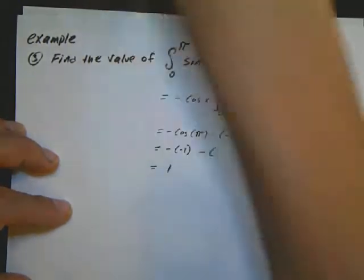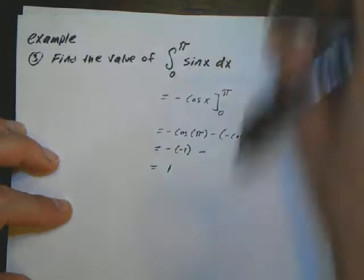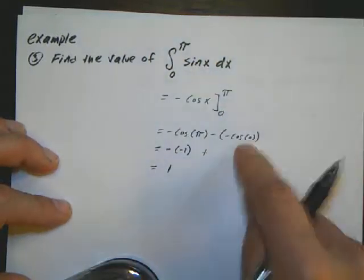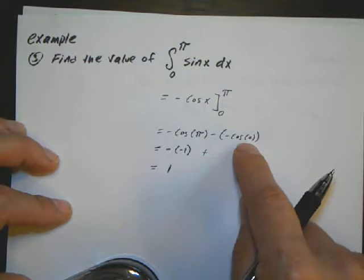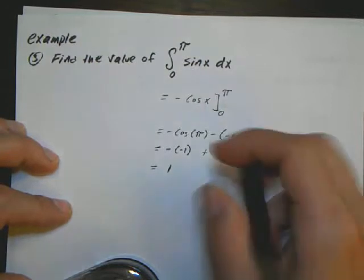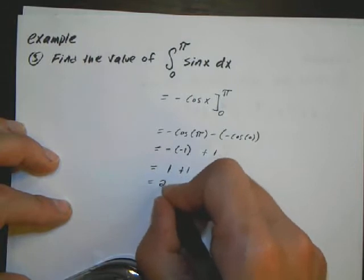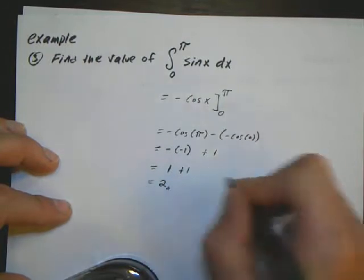Well, I have two minuses in a row, so this really becomes a plus. I can really write this as plus. And then cosine of 0 is 1. So this really becomes a 1, so I'm really adding 1 plus 1. So the answer is 2.